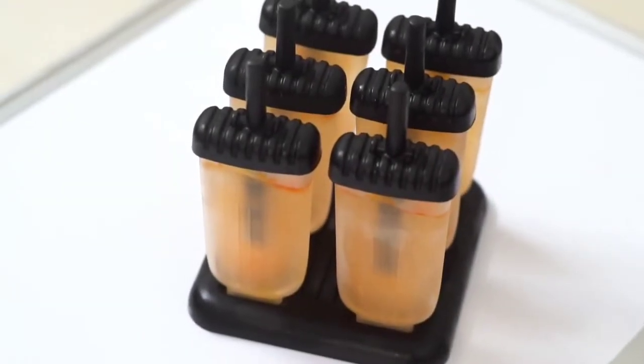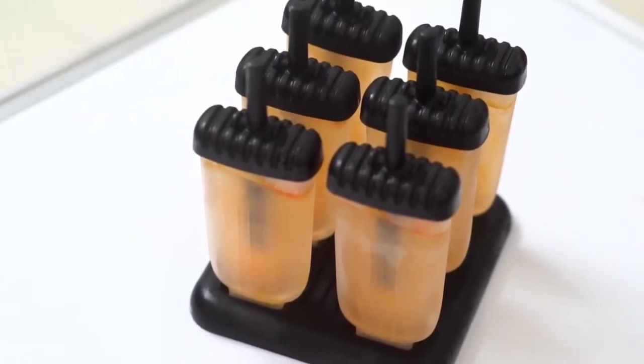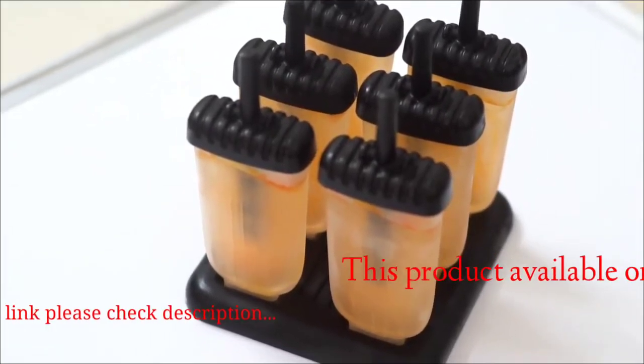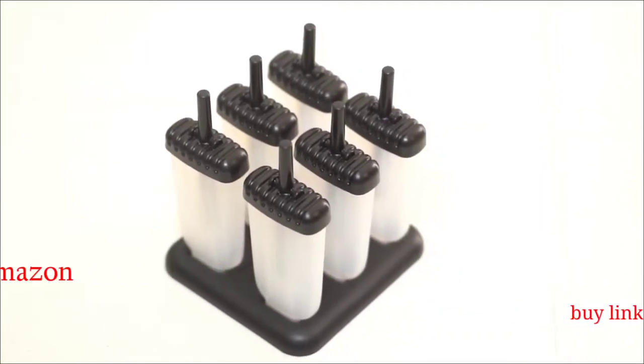Storite 6 piece plastic popsicle mold, reusable popsicle candy maker, easy release ice pop mold for kids in black. The set includes a popsicle mold base so you can place these ice cubes neatly.